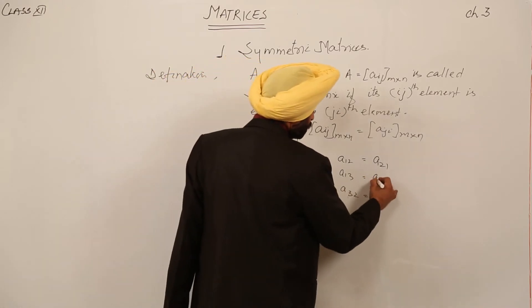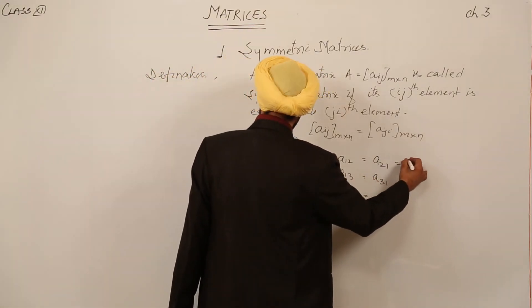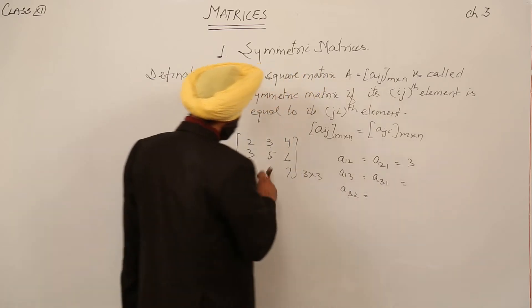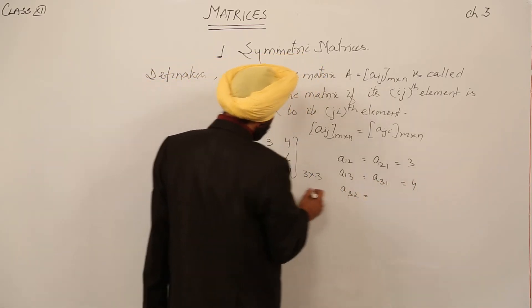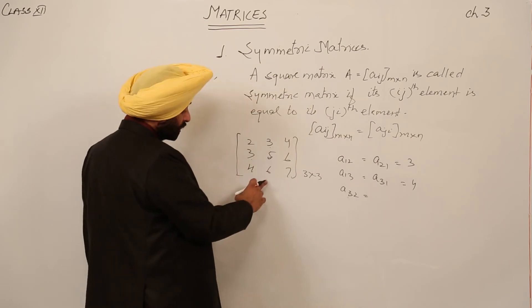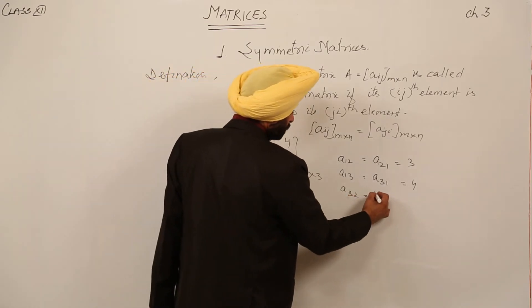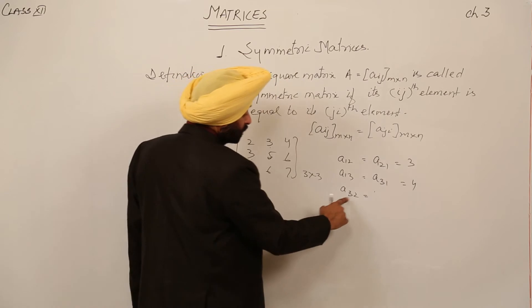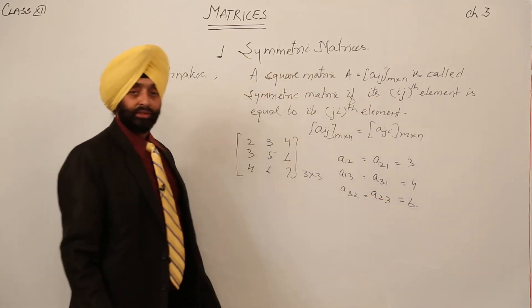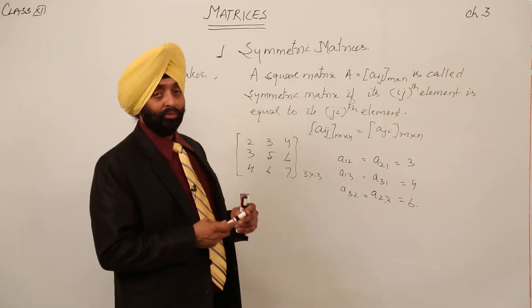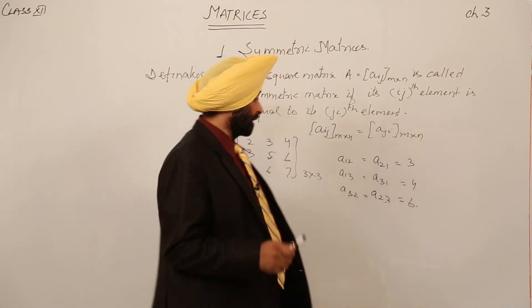Then we are having A_13. This should be equal to A_31. This is 3 and A_13 is 4, A_31 is 4. A_32 is 6, and A_32 should be equal to A_23. Both are 6. So like this, if ijth element is equal to jith element, then it is a symmetric matrix.